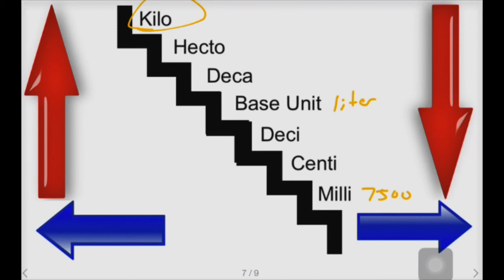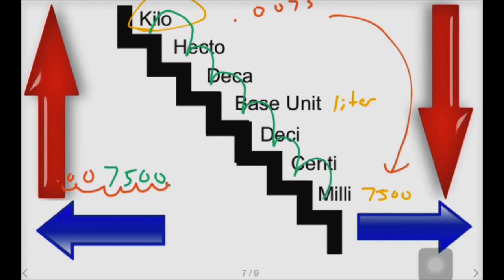Alright, so here we go. 7,500 is how many milliliters we had. We're going to go up one, two, three, four, five, six steps. I'm going to move my decimal place six places. So 0.0075 kiloliters is the same thing as 7,500 milliliters.